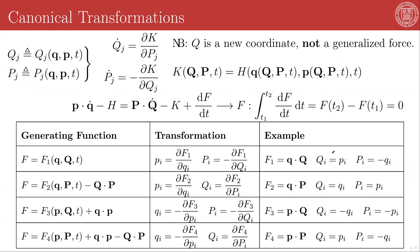Here are the transformations, all derived in exactly the same way that we got the transformations for the first case F1, along with a basic example for each. For example, a function of q dotted into capital Q is an example of the first class of generating function. You can also mix and match types and create composite generating functions built up out of multiple ones of these.